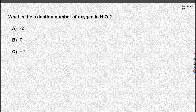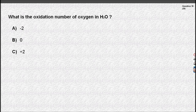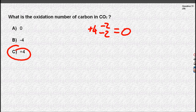Now since the oxidation numbers have to add up to zero, and hydrogen is plus one, oxygen must be minus two. Oxygen is always minus two in a compound. So carbon must be plus four if oxygen is always minus two in a compound.